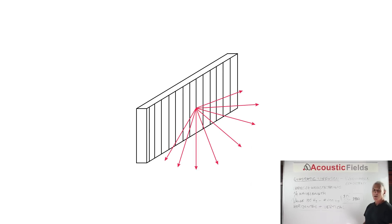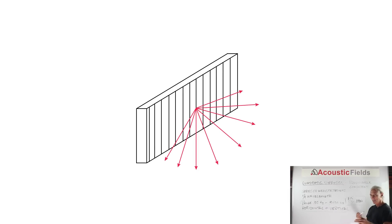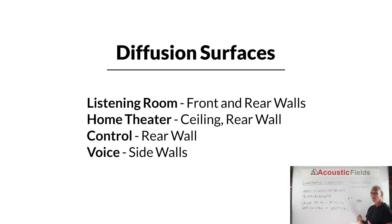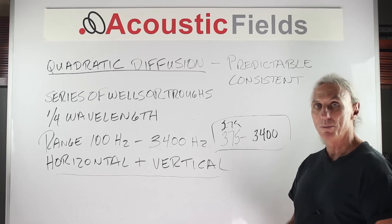A vertical diffuser diffuses sound in a horizontal domain — there's an inverse relationship between position and performance. A horizontal diffuser diffuses sound in a vertical way. So we get two dimensions of sound diffusion from the same technology just positioned differently. In listening rooms, the front wall and rear wall are almost givens for diffusion, and in a control room the rear wall is almost always a given. There are very few absolutes in room acoustics, but diffusion is always welcome on those room surfaces.